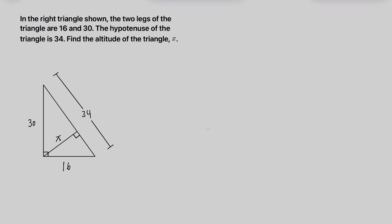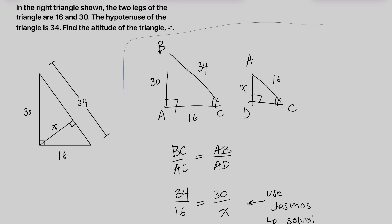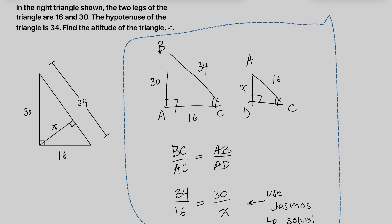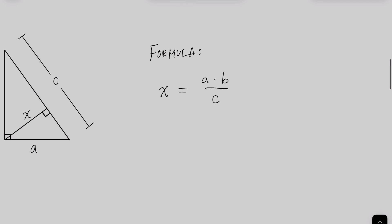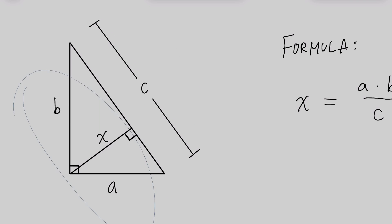If you ever see a question like this on the SAT, where you have the side lengths of a right triangle and you're trying to find the altitude, do not use similar triangles. Even though that only takes 45 seconds to a minute, there is a much faster solution that only takes 10 seconds. Simply memorize this formula: the altitude of any right triangle is A times B divided by C, where A and B are the legs and C is the hypotenuse. Now let's use this formula to solve this in about 10 seconds.